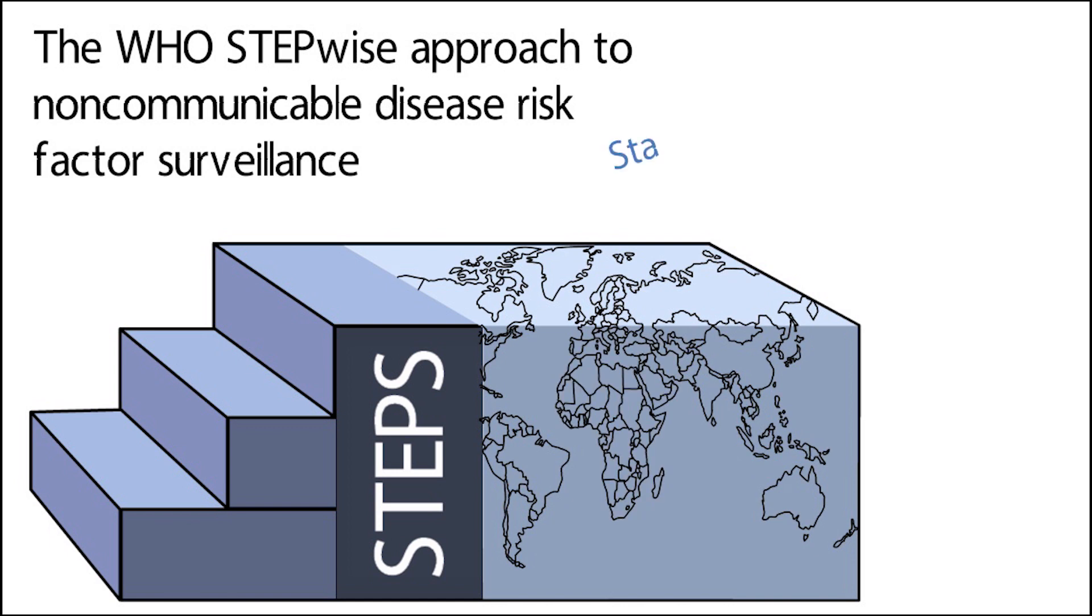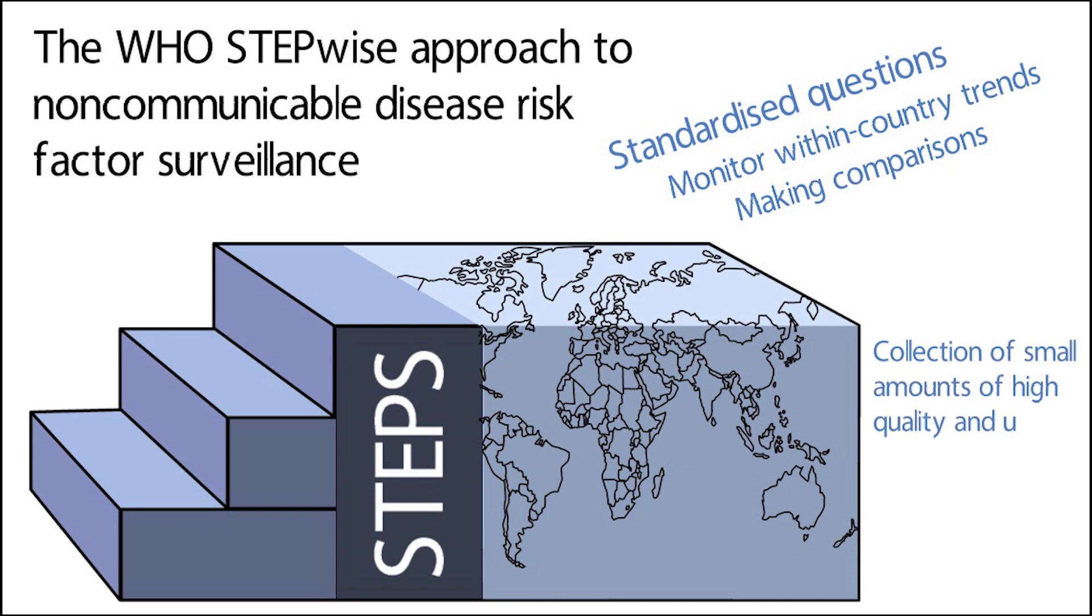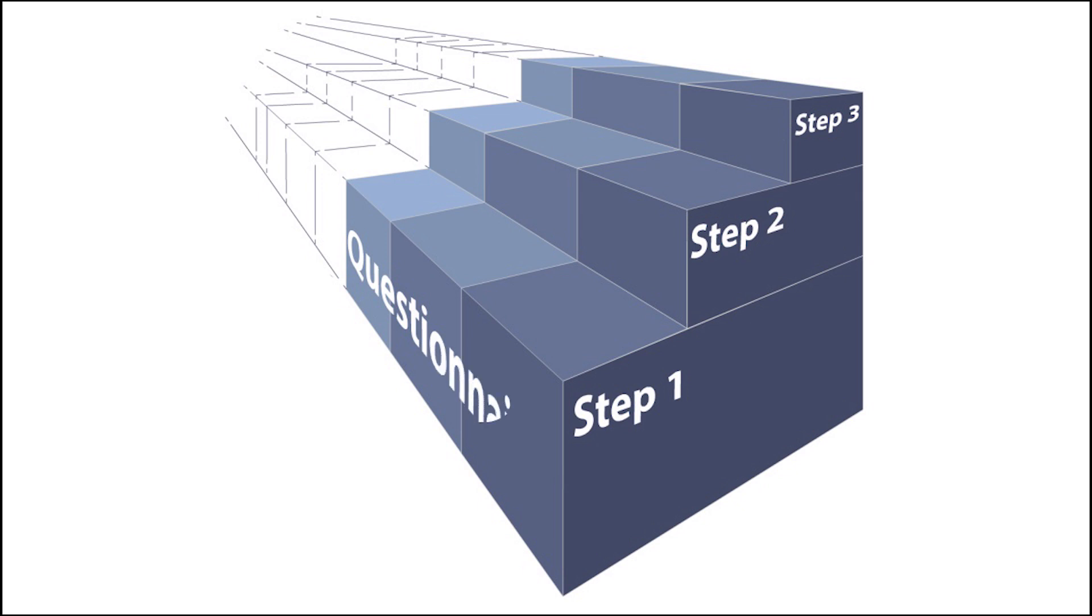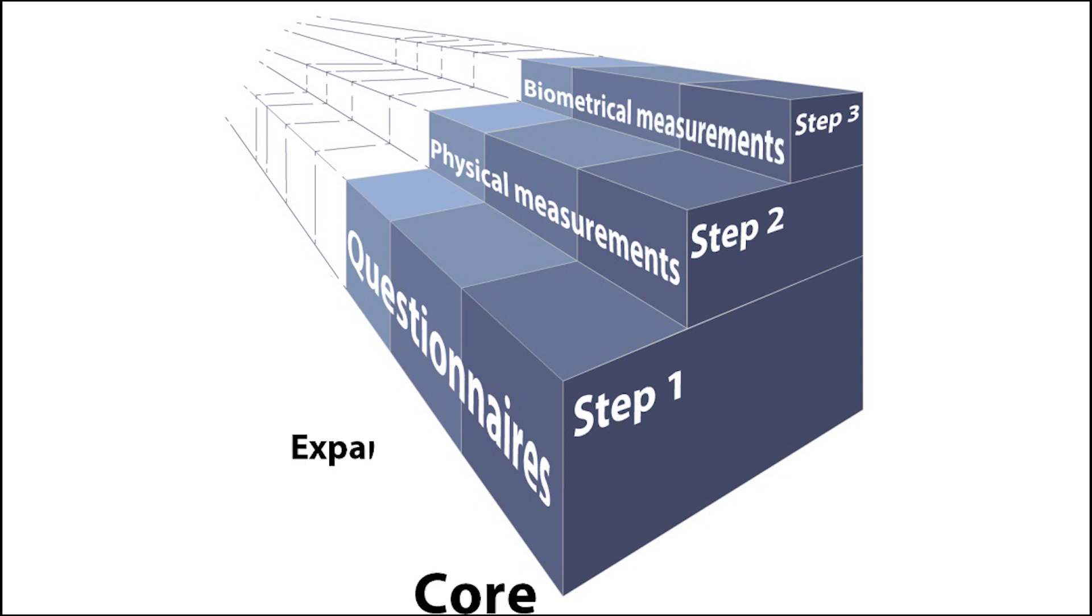By using the same standardized questions, all countries can use STEPS information to not only monitor within-country trends, but also for making comparisons across countries and across time. The approach encourages the collection of small amounts of high quality and useful information on a regular and continuing basis. STEPS is considered to be staged in that it starts with relatively simple to implement surveillance methods that most countries, even those with very limited capacity, should be able to implement, and then provides options to add more complex collection methods, such as the collection of body measurement data or the collection of blood samples for biochemical analysis, if resources are available and there is a need.